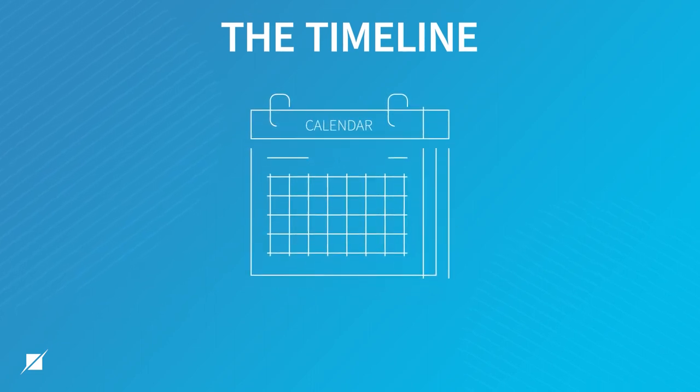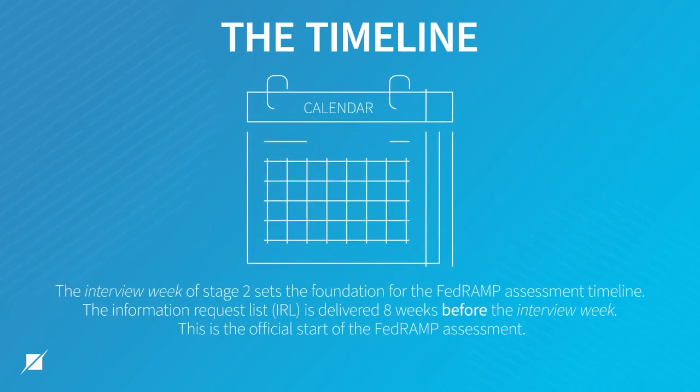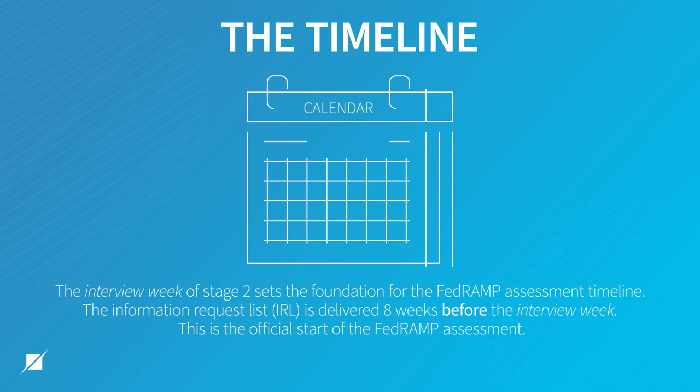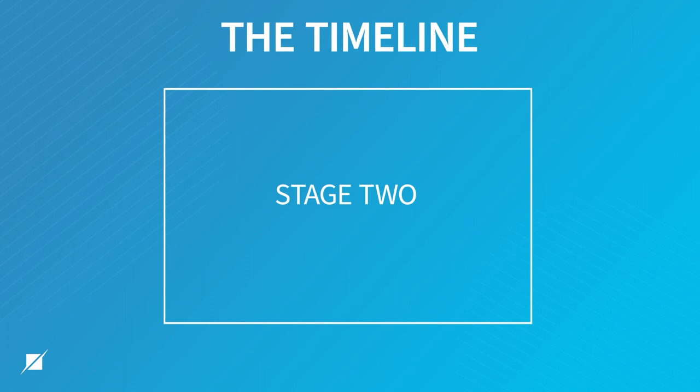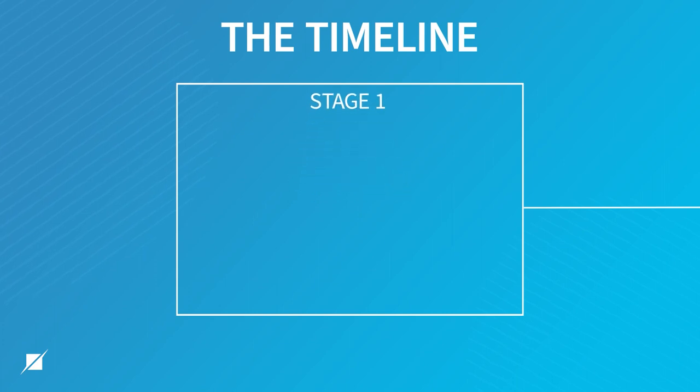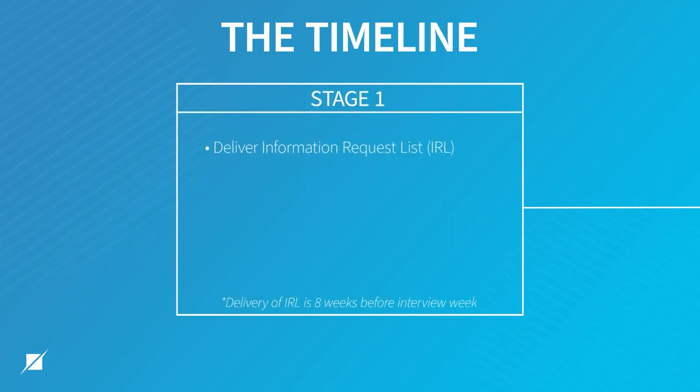In another video, Doug Barben was talking about the stages of the FedRAMP assessment — stage one and stage two. Stage two is where we do the bulk of interviews and technical review of evidence. The start of stage two is the interview week, and we use that as the foundation for the rest of the schedule and timeline. We back into stage one from that interview week — we take that interview week and back it up eight weeks, and we'll deliver the information request list. This is a list of the evidence and artifacts that you need to provide to us across both stages of the assessment for us to be able to execute our testing.